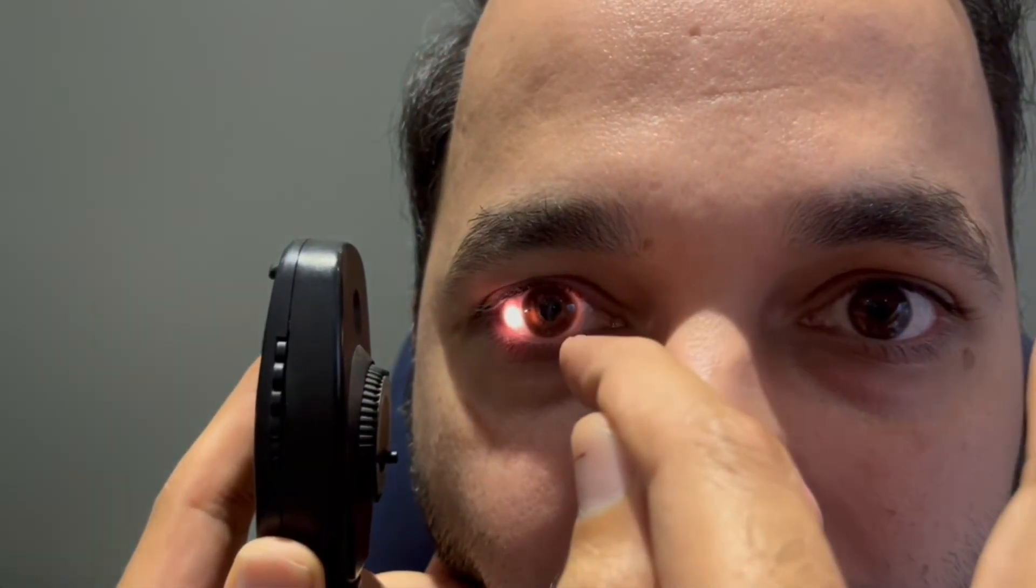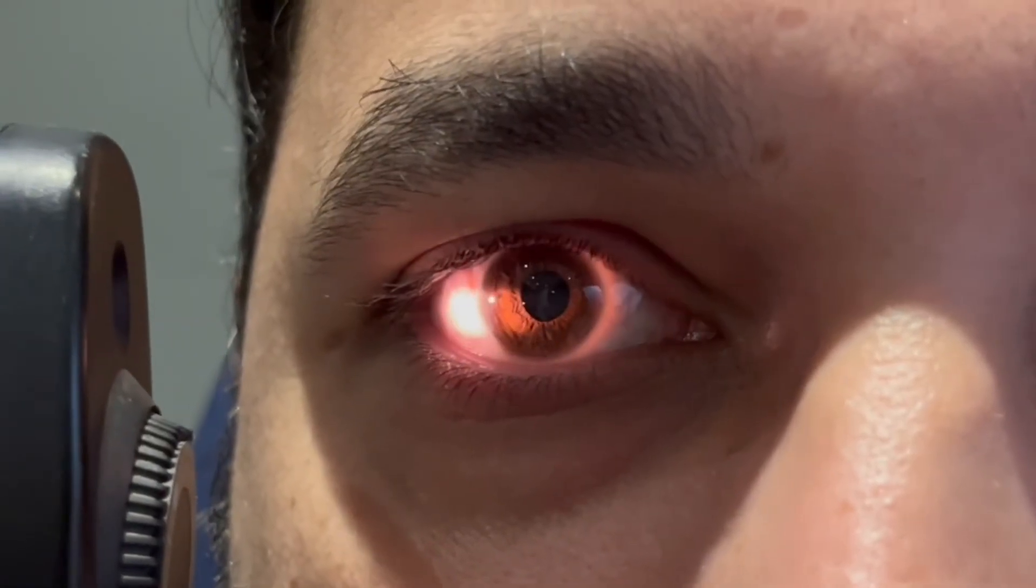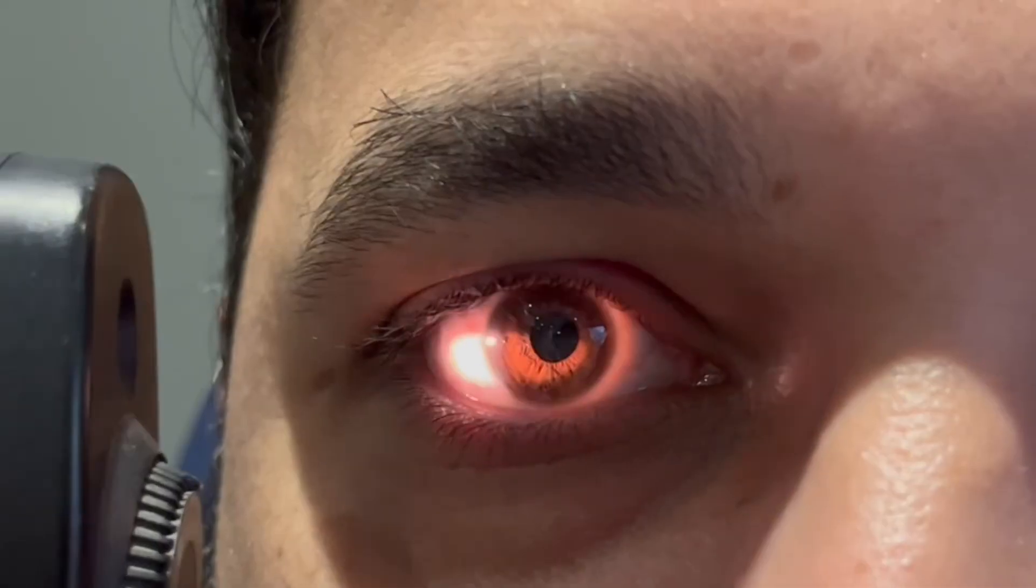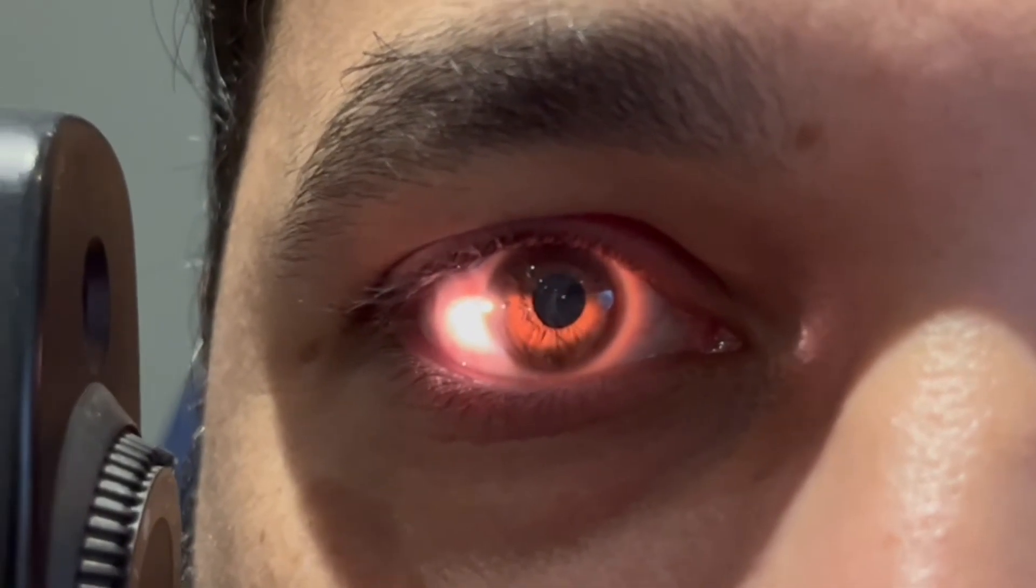You'll see the crescent being formed, and once you see it, you know there's reflection of light through the anterior chamber. The other way to do this